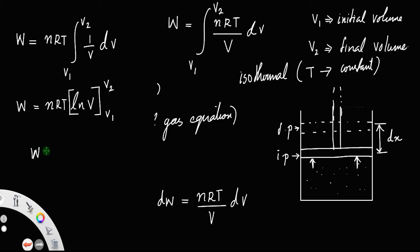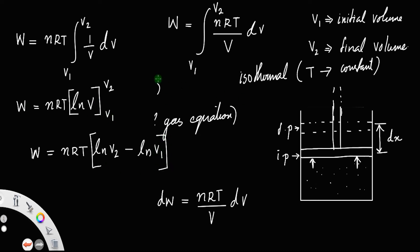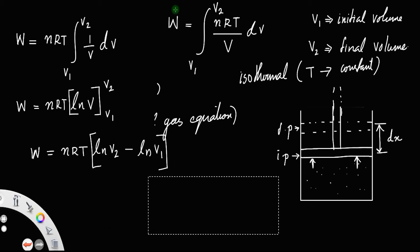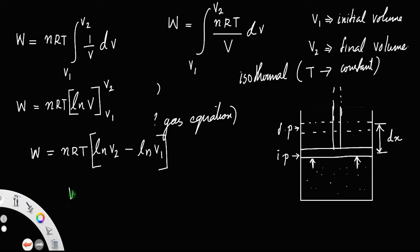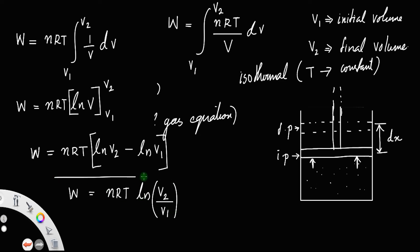Now you have to apply the limits. W is equal to nRT times log V2 minus log V1. But log A minus log B equals log A by B. Therefore, work is equal to nRT log(V2 divided by V1). This is the expression for work done using the natural logarithm.